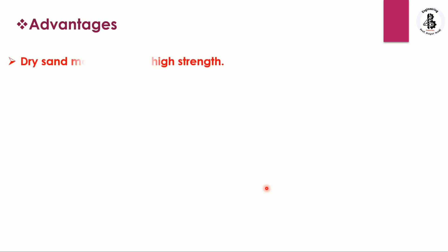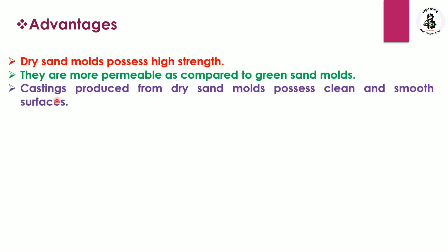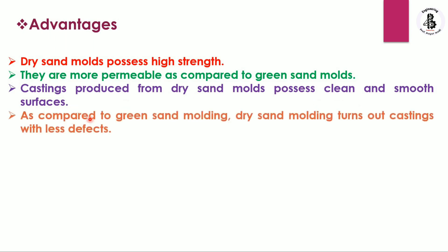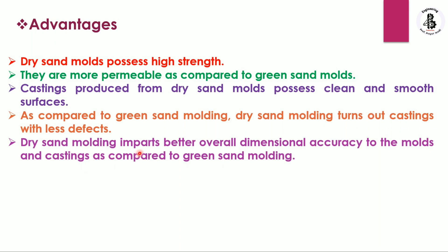Dry sand molds have several advantages: they possess higher strength compared to green sand molds; they are more permeable than green sand molds; castings produced have a cleaner and smoother surface finish; they produce castings with fewer defects; and they impart better overall dimensional accuracy to both molds and castings compared to green sand molding.